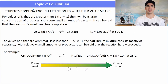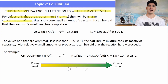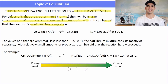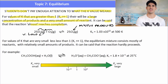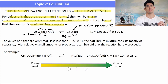What does the equilibrium constant mean? Students don't often pay enough attention to what the value actually tells them. For K values greater than 1, or much greater than 1, there will be a large concentration of products and a very small amount of reactants, and we can say the reaction almost goes to completion. For example, a reaction where Kc is 1.03×10¹², that's a very big K value, which means the equilibrium lies very much to the right — there's a lot more SO₃ than there is SO₂ and O₂.